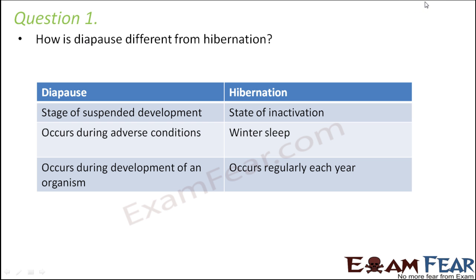Question number 1: How is diapause different from hibernation? Hibernation is a period often called winter sleep — a state where the organism remains inactivated for a couple of months during the year, and this happens regularly every year. But diapause is a stage of suspended development, where no development takes place in the organism, and this happens only during adverse conditions, so it doesn't happen regularly each year.